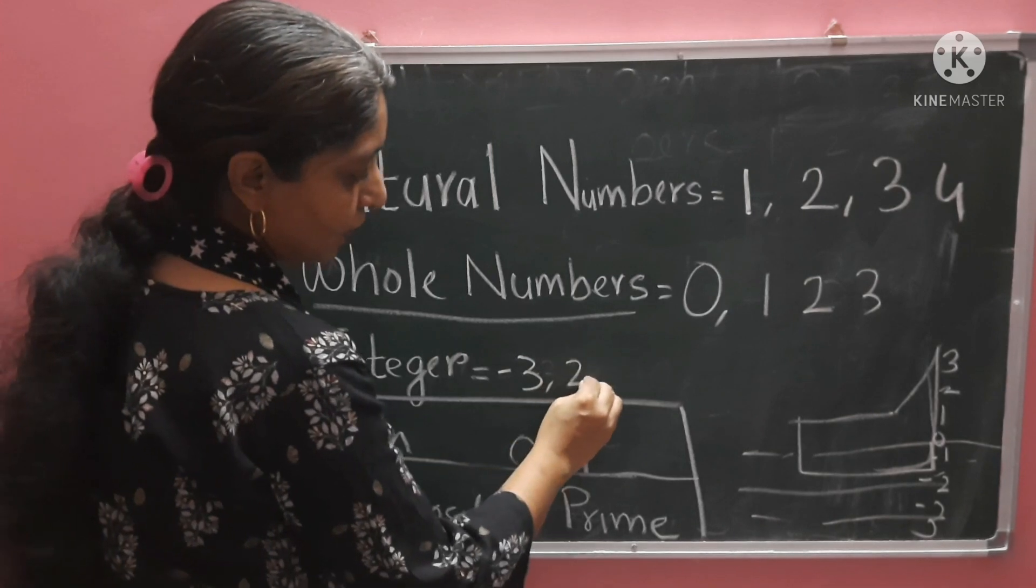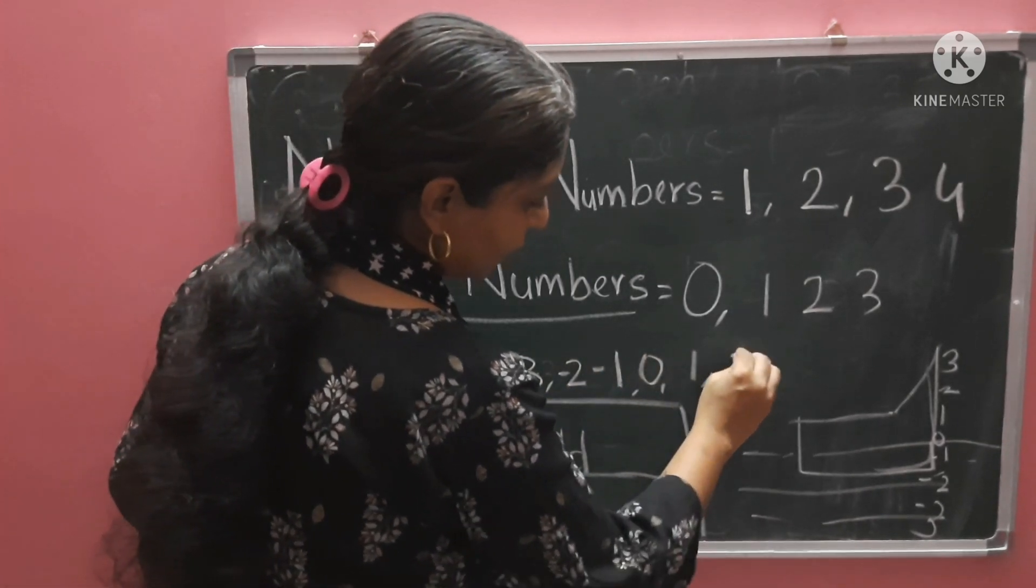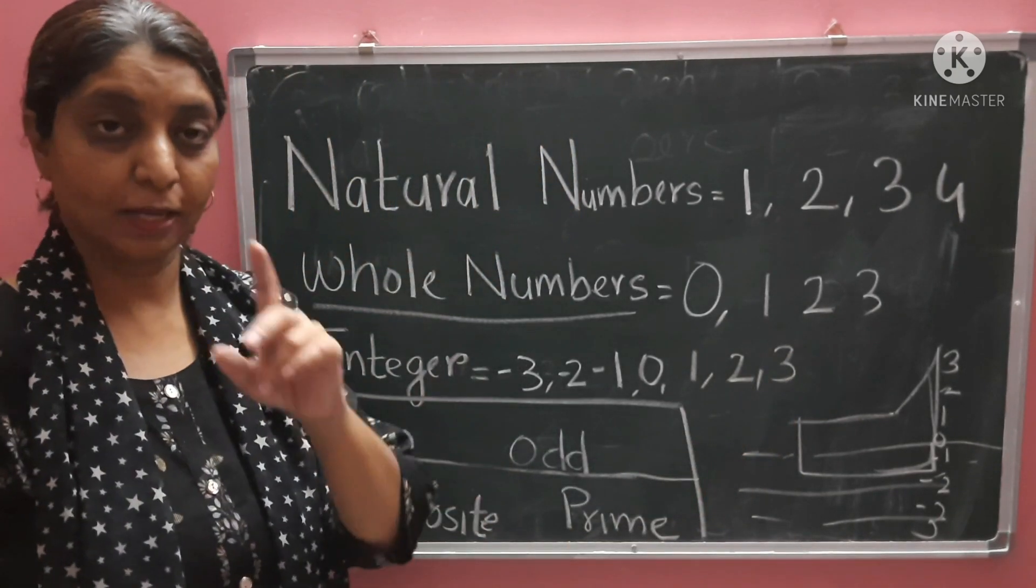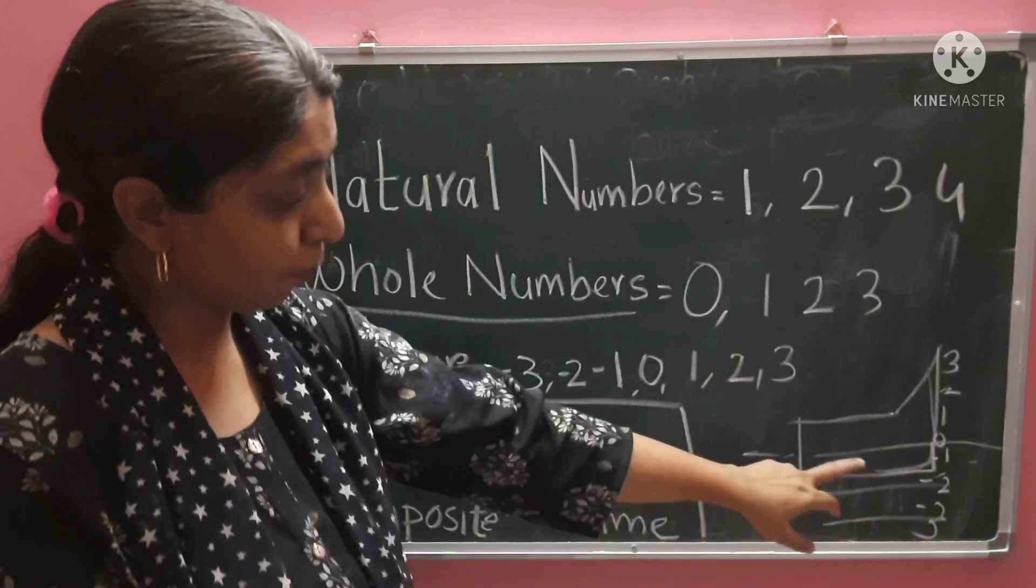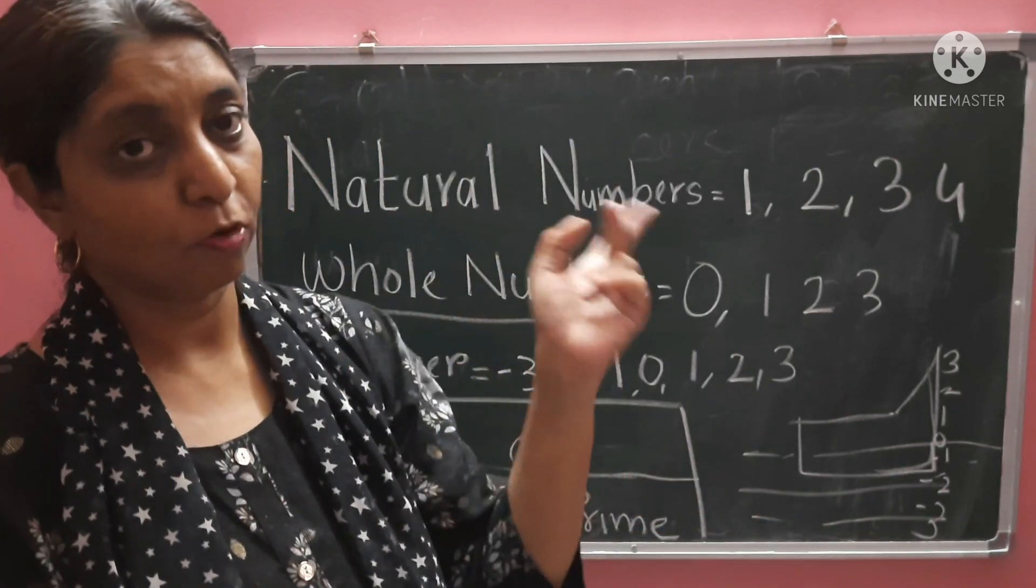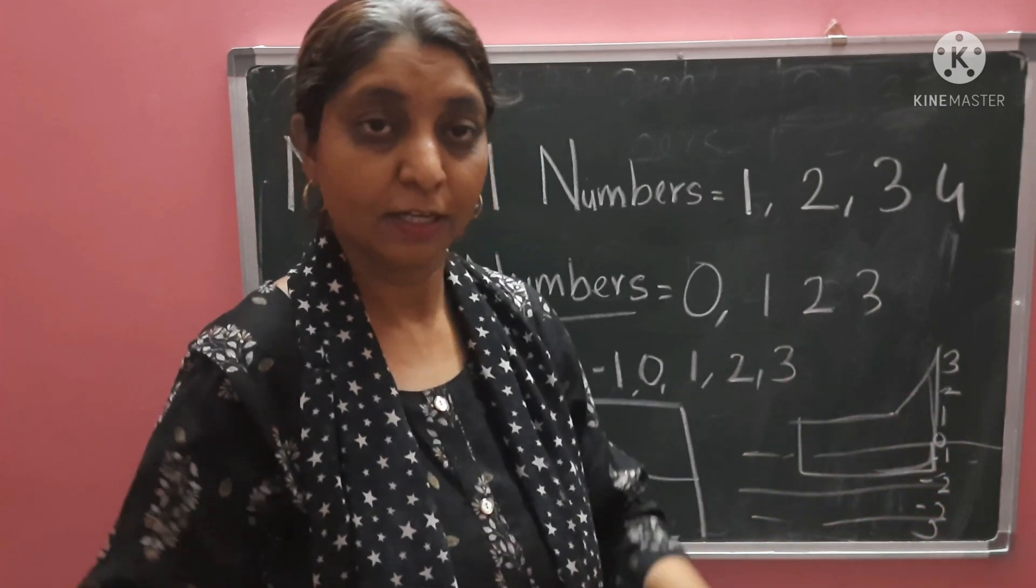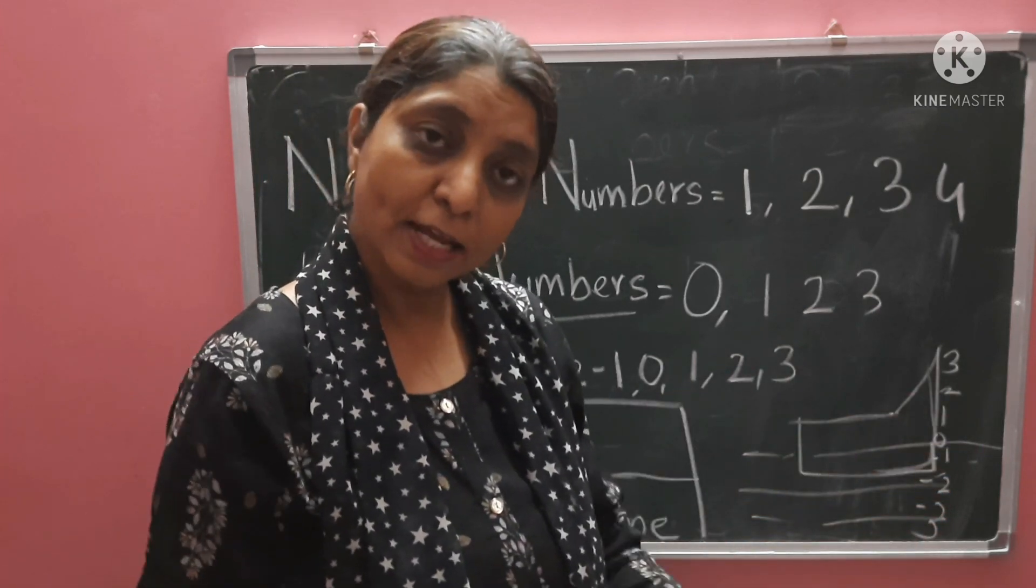Like minus 3, minus 2, minus 1. So, integers are both positive and negative. Please remember. Above water, below water. How will we count below? In negative also.